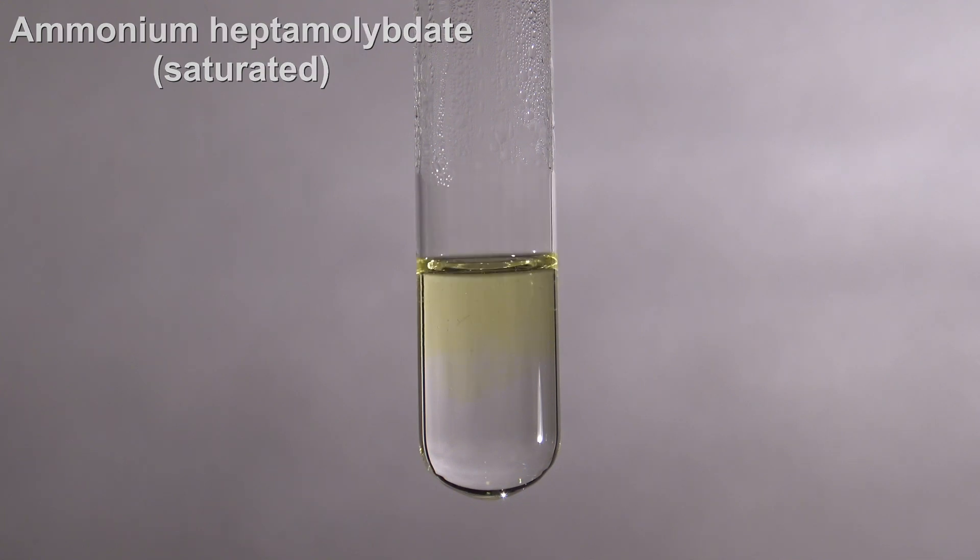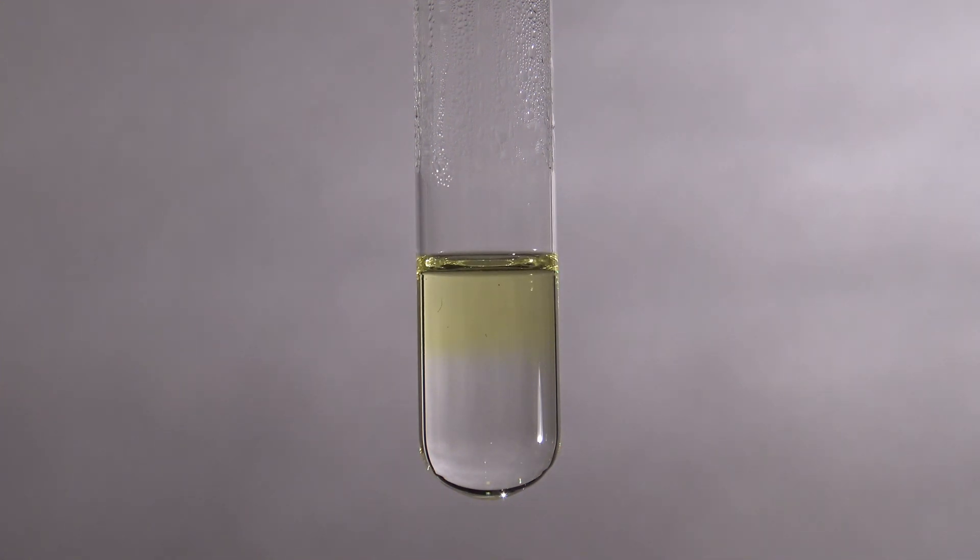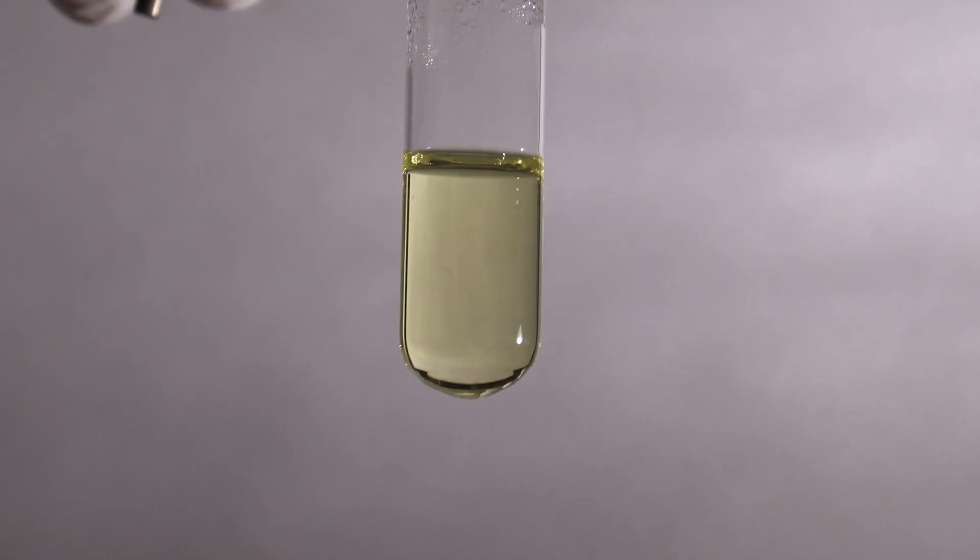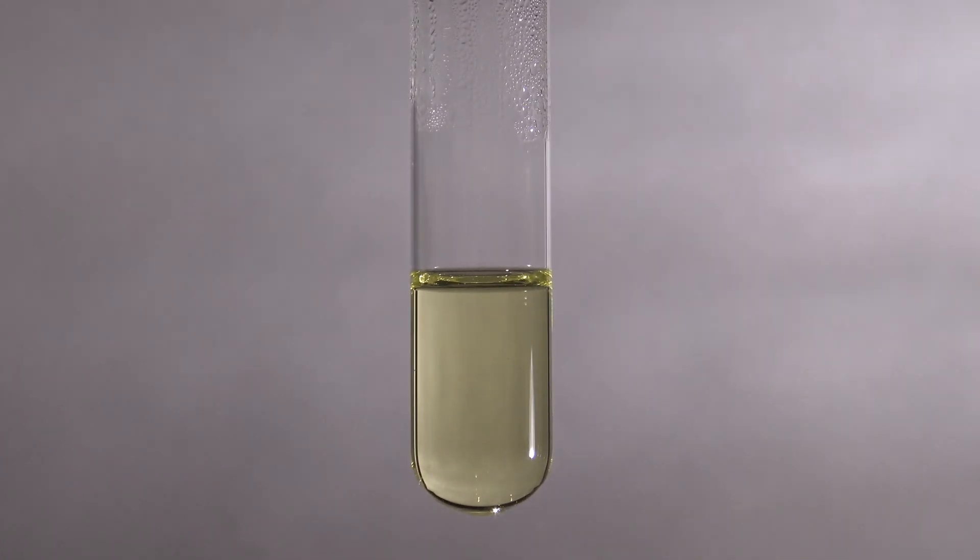The yellow color might be an indication that phosphate is present, but the test is only seen as positive when a yellow precipitate is formed. To force the formation of the precipitate, a drop of diluted ammonia was added.